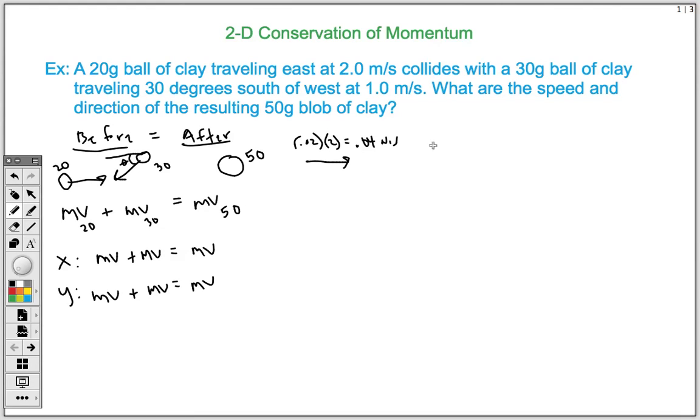And then our other object, our 30-gram ball, is traveling this way. It has a mass of 0.03 and a velocity of 1 meter per second. So it has a total momentum of 0.03 newton seconds. The nice thing is, this object that's traveling east only has an x direction. So this 0.04 basically takes the place of this value right here. And because it has no y component, this basically becomes 0.